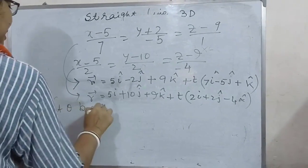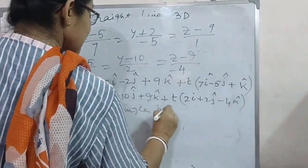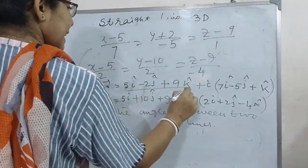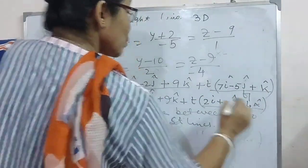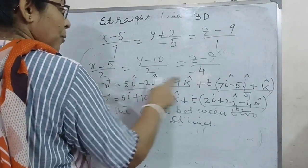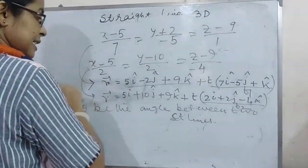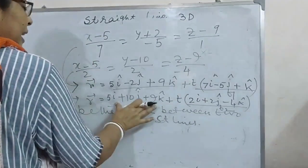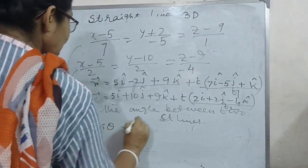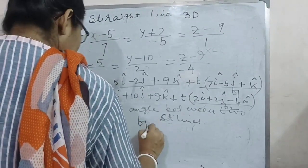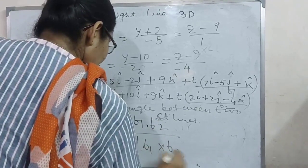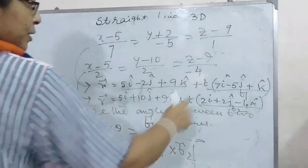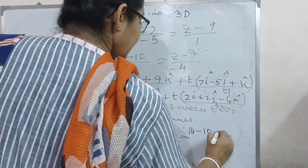Let theta be the angle between the two straight lines. Here b1 = (7i minus 5j + k) and b2 = (2i + 2j minus 4k). The formula is cos theta = (b1 · b2) / (|b1| × |b2|). The dot product b1 · b2 = 14 minus 10 minus 4 = 0.